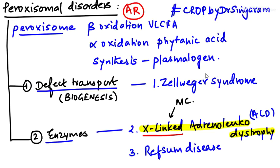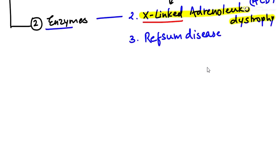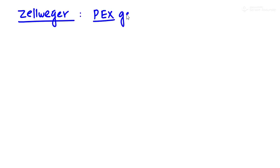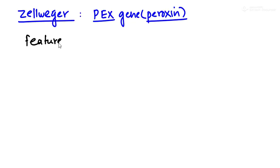Zellweger syndrome is a problem of transport of proteins into the peroxisomes. The gene which is defective is the PEX gene (P-E-X), which codes for a protein called peroxin. This is defective in almost all cases of Zellweger syndrome.